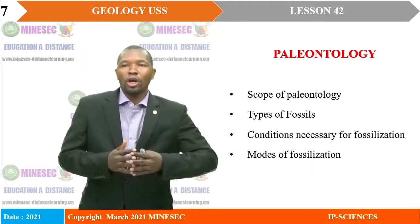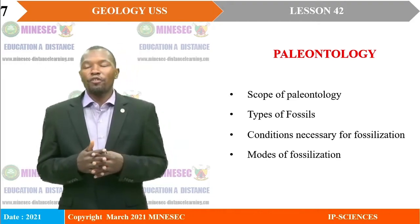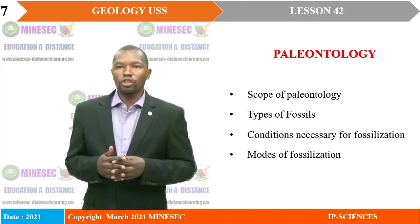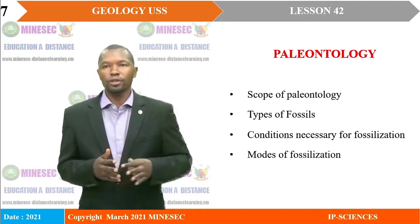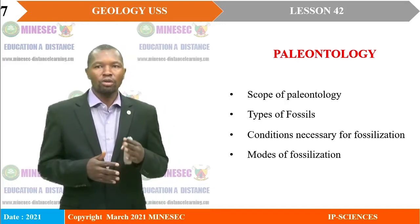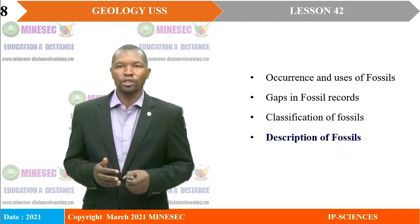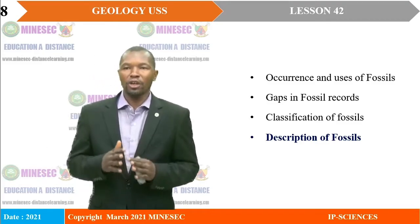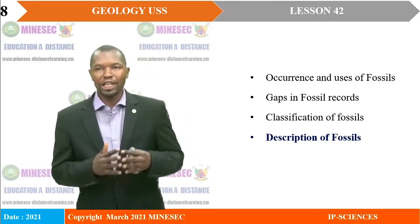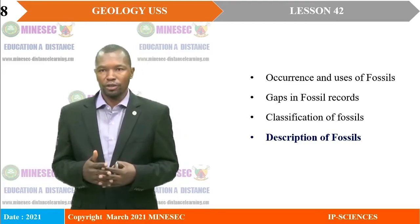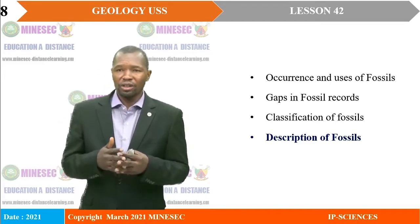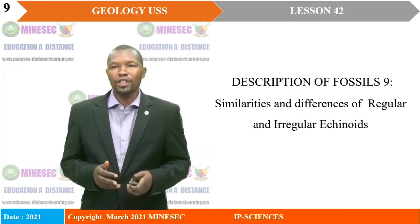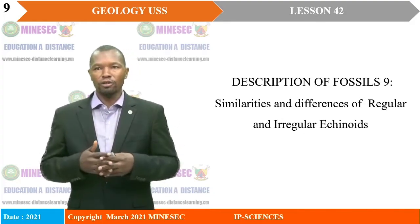We continue with the topic: Paleontology. We have previously seen the scope of paleontology, types of fossils, conditions necessary for fossilization, modes of fossilization, occurrence and uses of fossils, gaps in fossil records, classification, and description of fossils. We will concentrate our lesson today on description of fossils. Our lesson 42 is titled 'Description of Fossils 9,' focusing on the similarities and differences of regular and irregular echinoids.